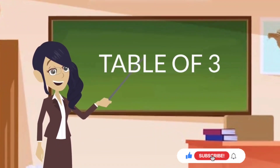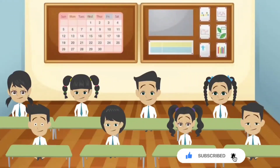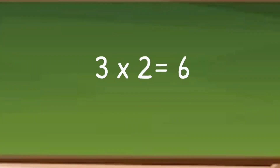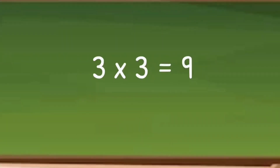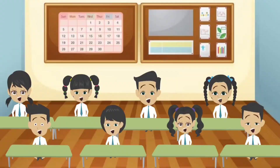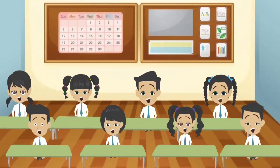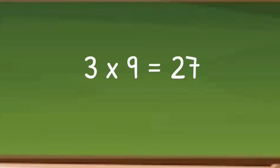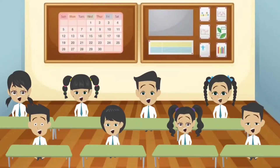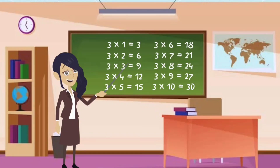Let's learn table of 3. 3 ones are 3. 3 twos are 6. 3 threes are 9. 3 fours are 12. 3 fives are 15. 3 sixes are 18. 3 sevens are 21. 3 eights are 24. 3 nines are 27. 3 tens are 30.